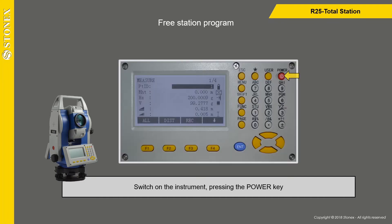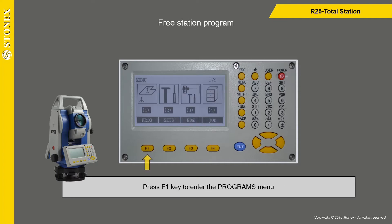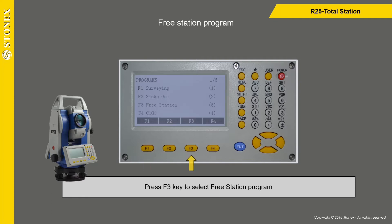Switch on the instrument by pressing the power key. Press F1 key to enter the programs menu, then press F3 key to select the free station program.